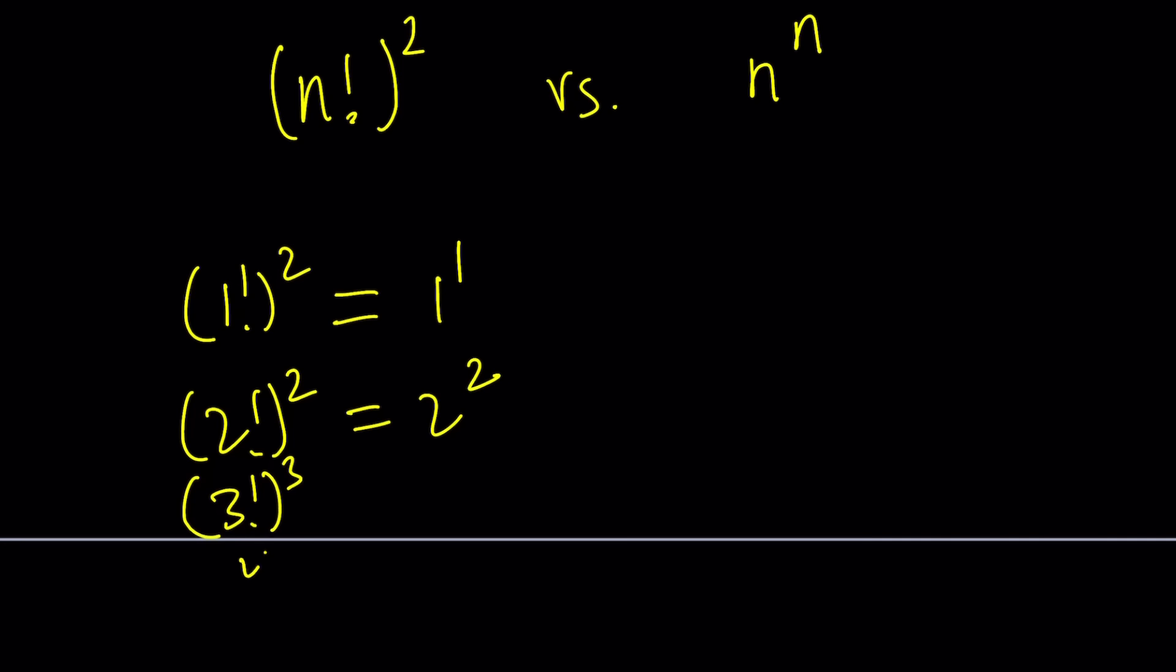And then 3 factorial cubed is 6 to the third power, which is 216. And then on the other hand, I have 3 to the third, which is 27. This is definitely going to be much, much larger. As you can see, it grows pretty fast. Factorials grow fast. And when you square them, they're going to grow like crazy.